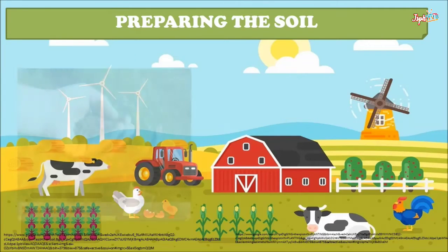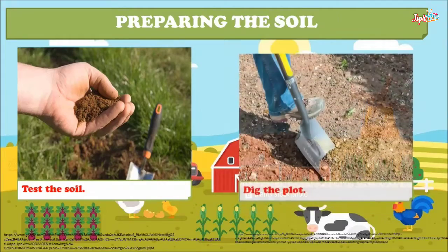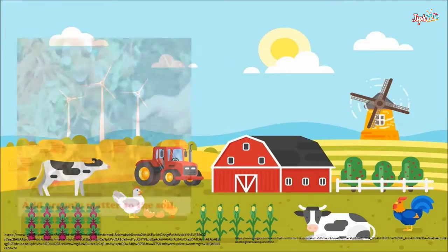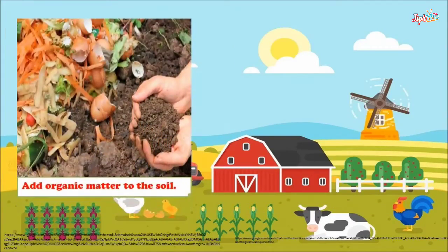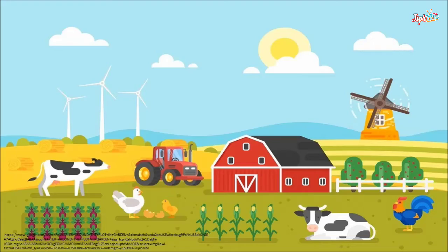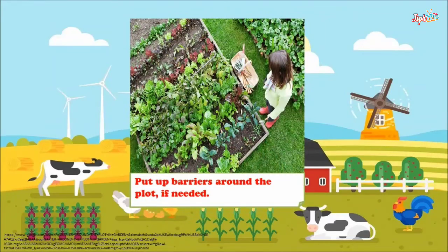For preparing the soil, first test the soil, dig the plot, add organic matter to the soil, and turn the soil. Put up barriers around the plot if needed.